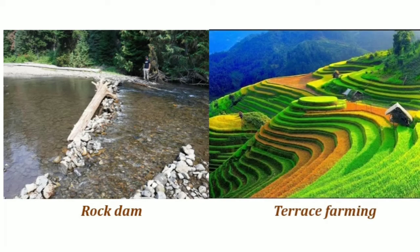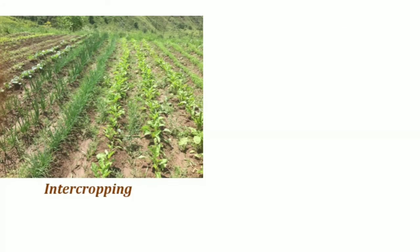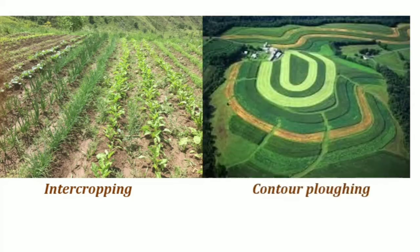Terrace farming — terraces are made on steep slopes so that flat surfaces are available to grow crops; they reduce surface runoff and soil erosion. Intercropping — different crops are grown in alternate rows and sown at different times to protect the soil from rainwash. Contour plowing — plowing parallel to the contours of a hill slope forms a natural barrier for water flowing down the slope.